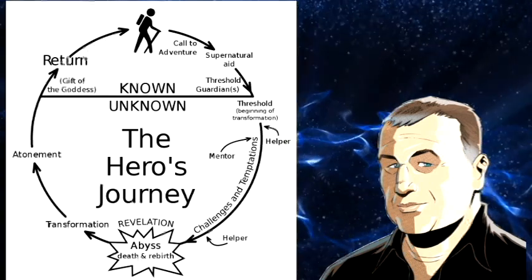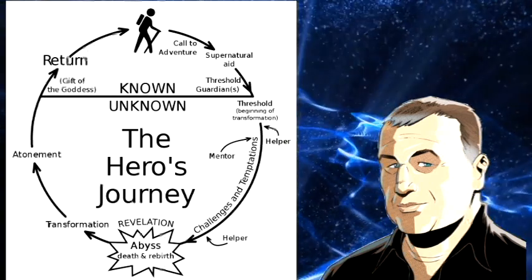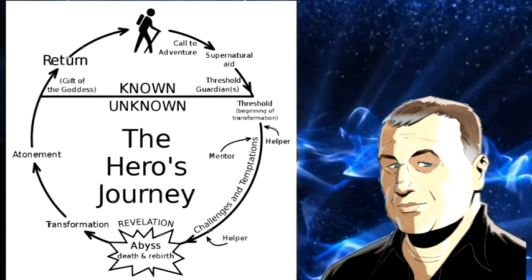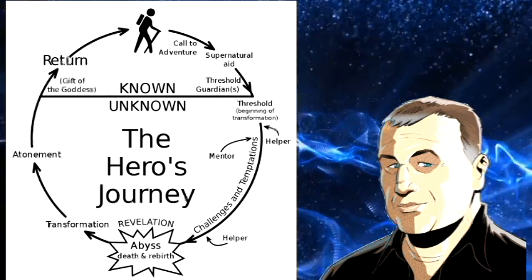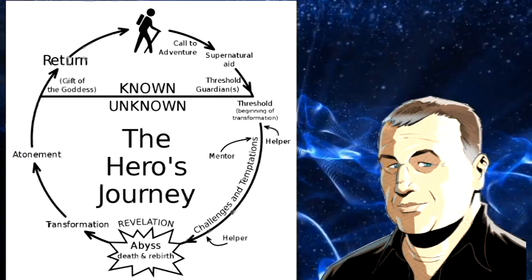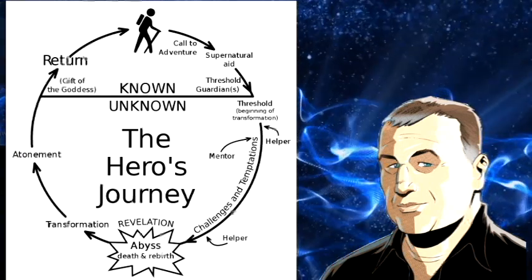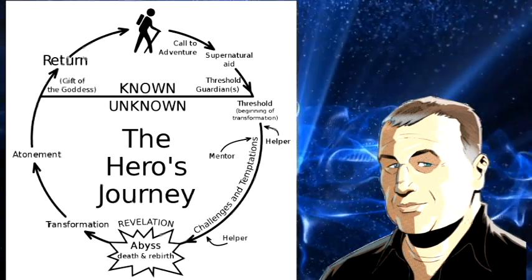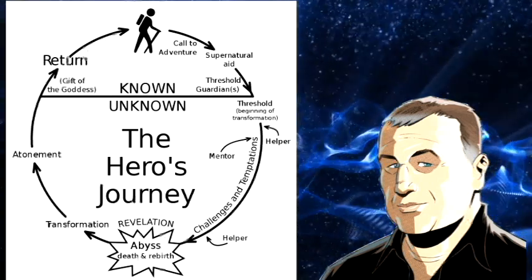They encounter a helper or a mentor, usually somebody who gives them information that they need in order to achieve the goals that they have. They will go through a series of challenges and temptations which is going to show us through their choices what kind of character they are, whether they're smart or whether they're dumb, and in the process they learn something.